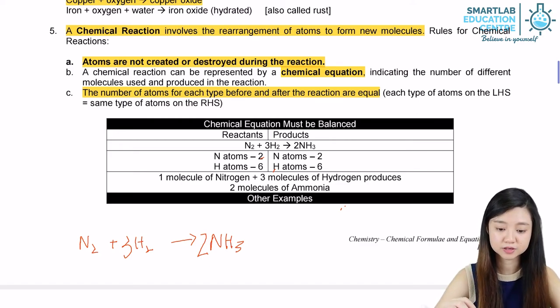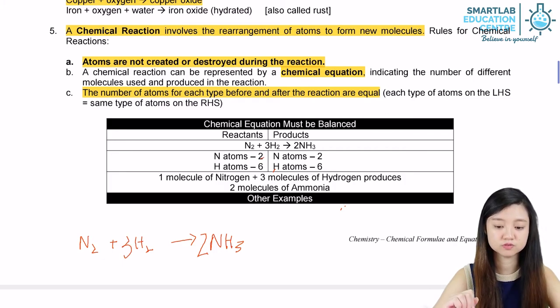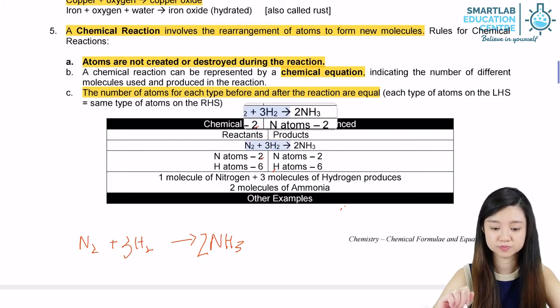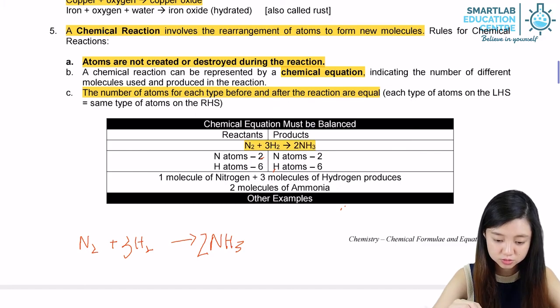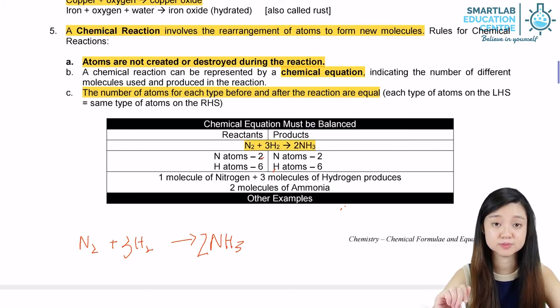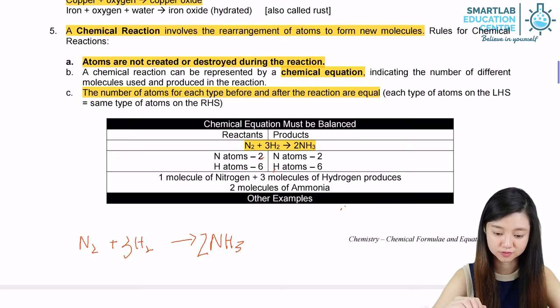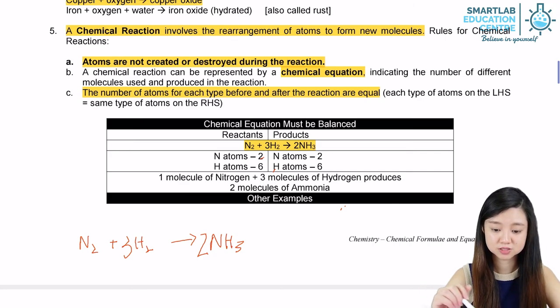So in the end, the chemical equation will be this: N₂ plus 3H₂ will give you 2NH₃. On the left, there's going to be two atoms of nitrogen, same as the right. And on the left, there's six atoms of hydrogen, same as the right. So this is called a balanced chemical equation.